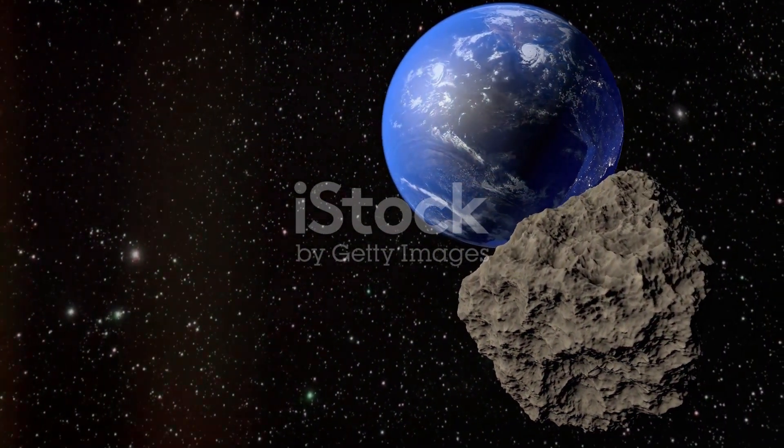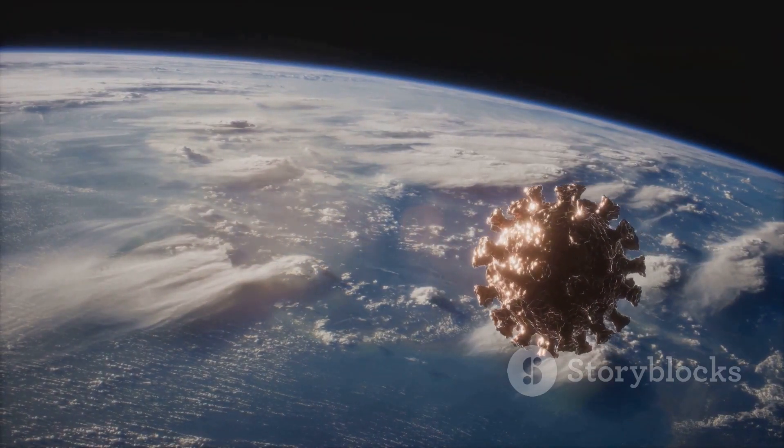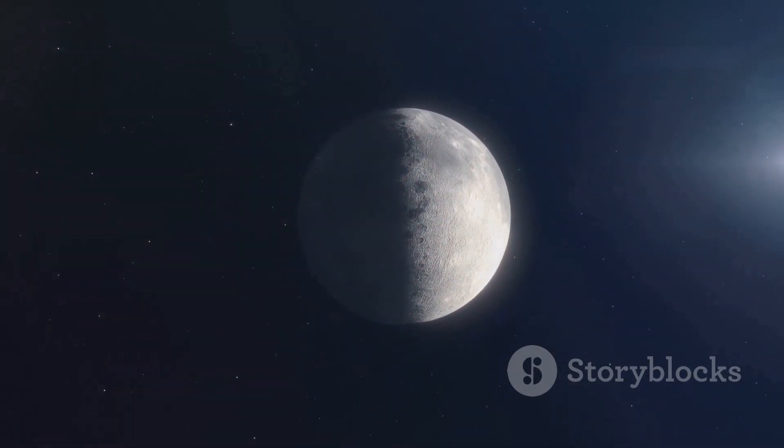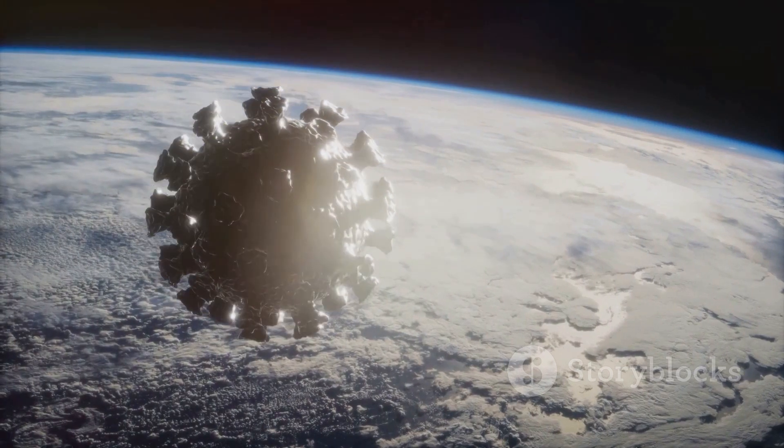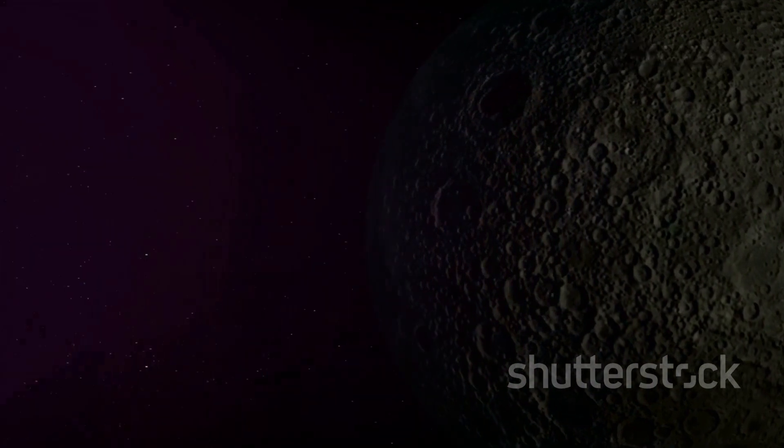A mini-moon is a small object that gets captured by Earth's gravity, orbiting temporarily before being ejected back into space. Unlike our permanent moon, mini-moons make brief visits. They usually consist of space debris or asteroids that drift close enough to Earth to be drawn in.